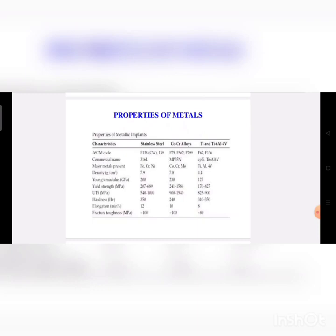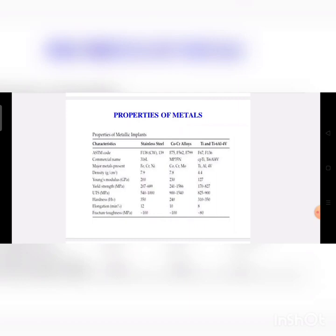The properties of metallic implants: stainless steel, cobalt-chromium alloys, and titanium alloys each have ranges of hardness, elongation, and fracture toughness. For hardness, stainless steel has a range of 350, cobalt-chromium alloy 240, and titanium 310 to 350. Stainless steel is the hardest, followed by titanium and cobalt-chromium alloys. Based on application and required properties, any one of these metals can be selected.